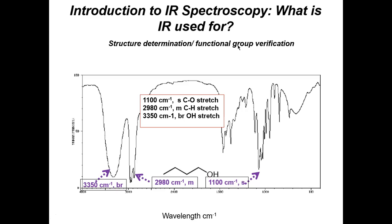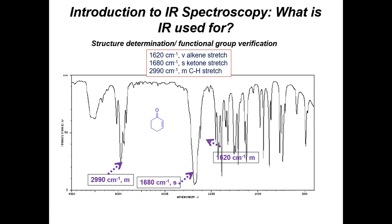We're going to start NMR shortly. For cyclohexanone, at 2990 you see the alkyl stretching for the ring, at 1680 a very strong ketone stretch, and at 1620 the alkene stretch — which actually overlaps with the ketone because they're both pi systems with similar stretching vibrations. You can see them right on top of each other. Again, from the spectrum alone you can identify functional groups but have no idea how the molecule is constructed.